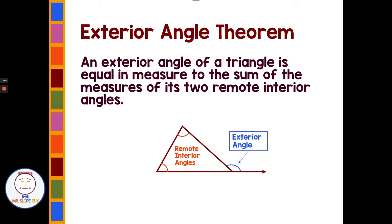So the exterior angle theorem — this is the most important concept we're talking about today. An exterior angle of a triangle is equal in measure to the sum of the measures of the two remote interior angles. So these two angles in orange, the remote interior angles — remote meaning they're the furthest away from the exterior angle — these two angles add up to equal the exterior angle.